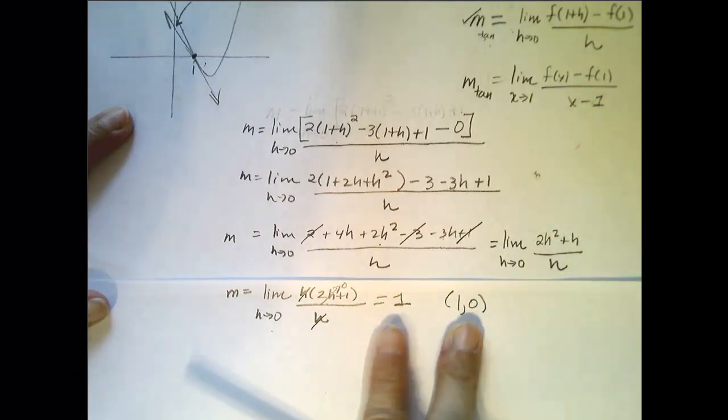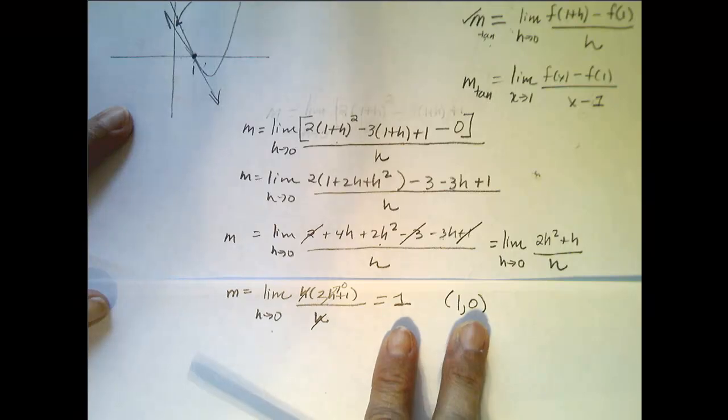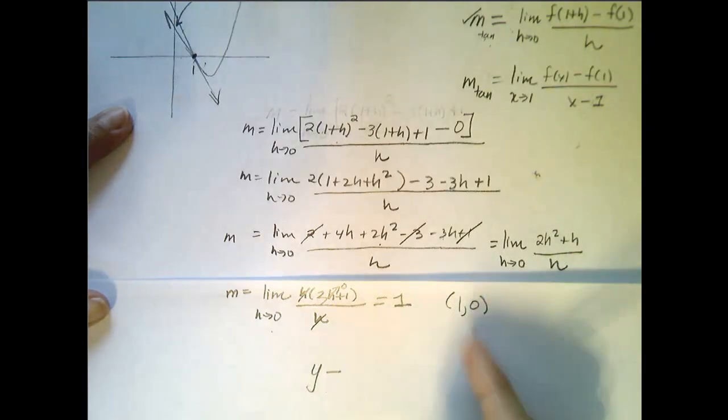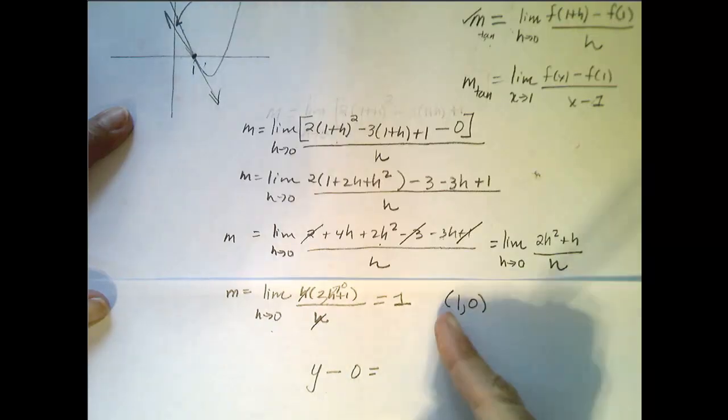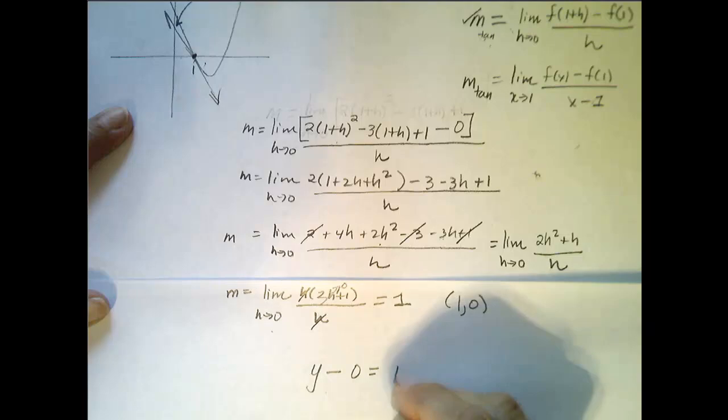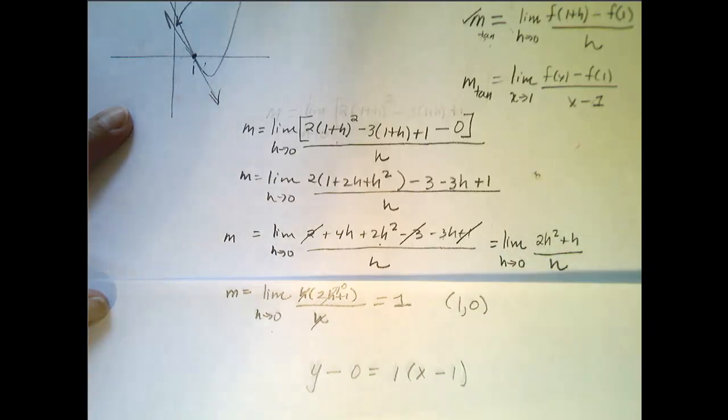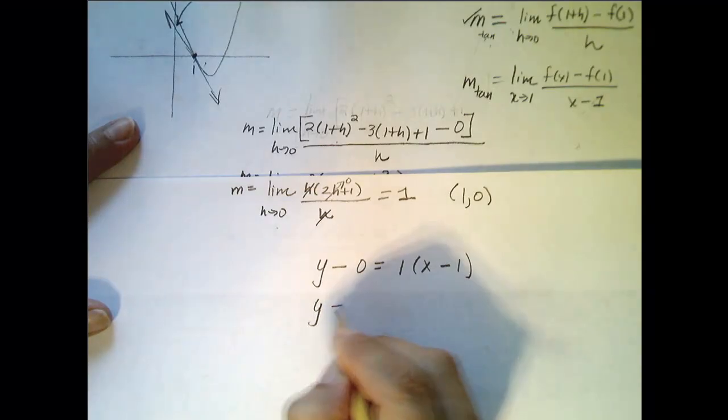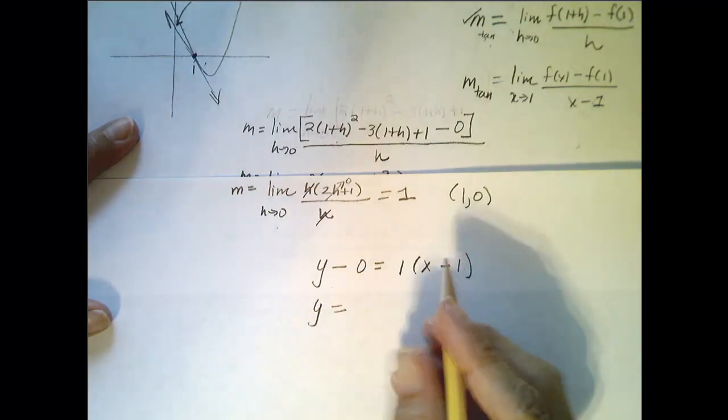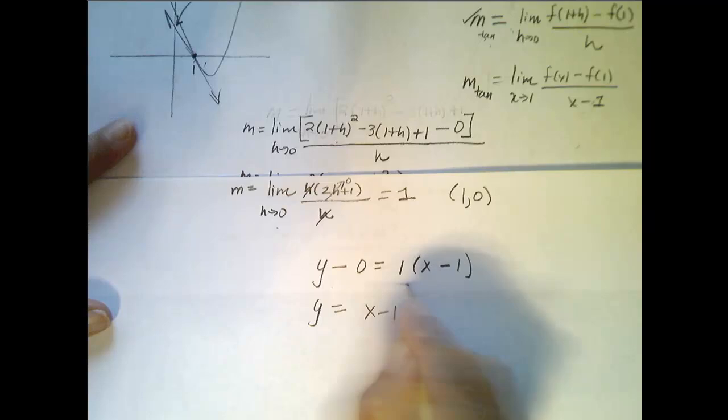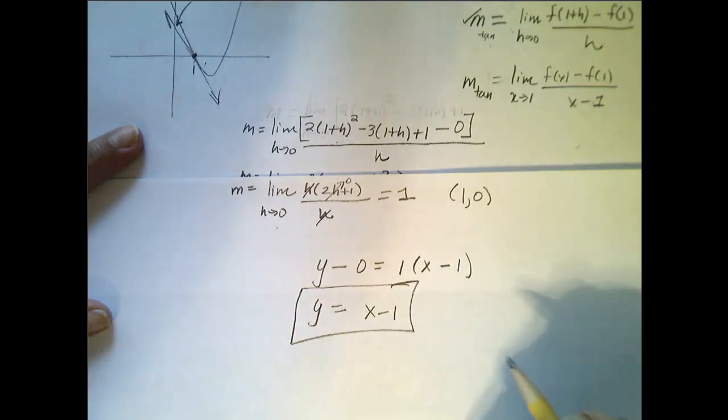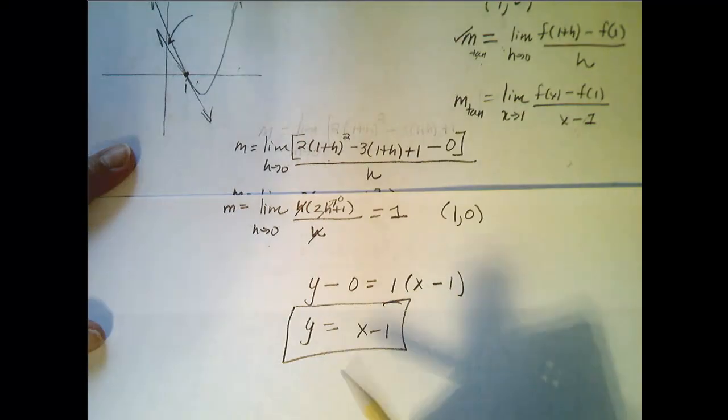Now it's just down to algebra. I have everything I need to write the equation of that tangent line. So remember, it's y minus my y value of a point on the line equals the slope, which is 1, times x minus my x value. That's equal to y equals x minus 1. And that is the equation of the tangent line to our graph at x equals 1.